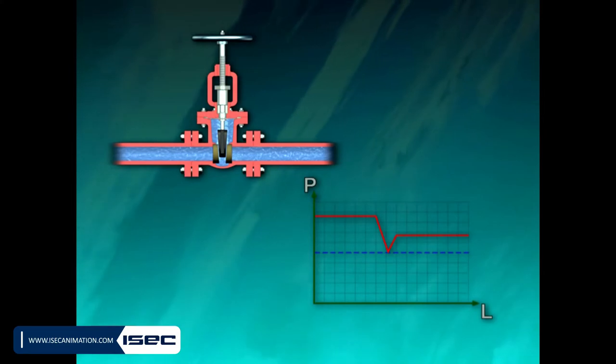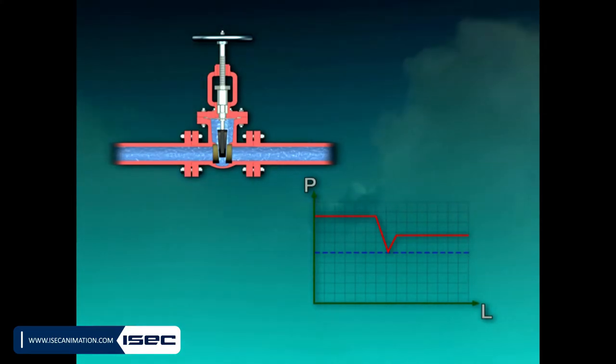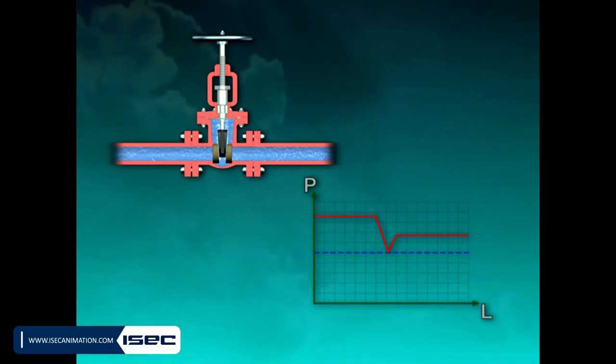If the vapor pressure of the service fluid was shown with a line, the line and curve would rationally have four positions in relation to each other.